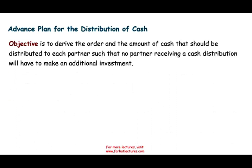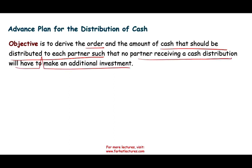The objective of the advanced plan for cash distribution is to derive the order and amount of cash that should be distributed to each partner, such that no partner receiving a cash distribution will need to make an additional investment. Simply put, we prepare the schedule upfront, and based on that schedule, every time we make a sale, we already know how much cash to pay to each partner.